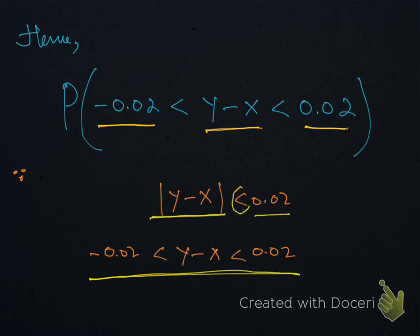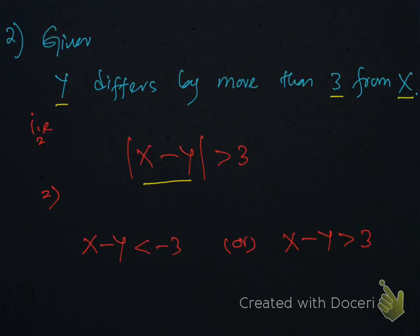When we have the lesser sign, this quantity lies between the negative and positive of this value, that is -0.02 and 0.02.